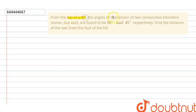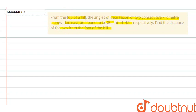The question is: from the top of a hill, the angles of depression of two consecutive kilometer stones due east are found to be 30 degrees and 45 degrees. Find the distance of the two stones from the foot of the hill. In this question, we have to find the distance of the stones from the foot of the hill.